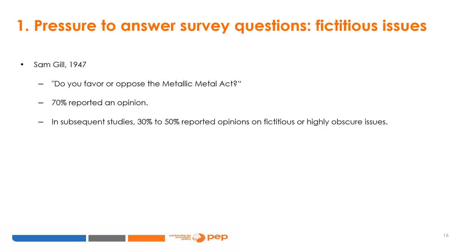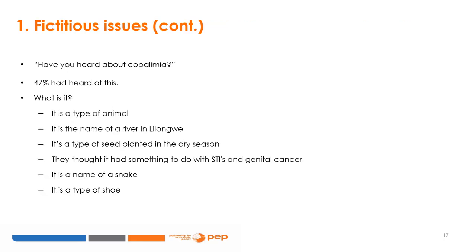Some respondents may feel pressure to answer questions they don't know. For example, a study by Gilles asked, 'Do you favor or oppose the Metallic Metal Act?' — 70% reported an opinion, yet the act does not exist. In subsequent studies, 30% to 50% reported opinions on fictitious or highly obscure issues. Similarly, another survey asked 'Have you heard about copulimia?' — 47% said yes, yet copulimia does not exist.